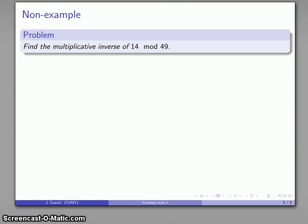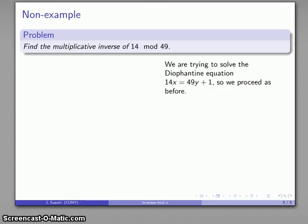Well, that's great. That gives us a nice general example of how we might find multiplicative inverses, except sometimes we can't. So for example, let's consider the problem of finding the multiplicative inverse of 14 mod 49. And if I try to do this, I'm going to try to find something which, when I multiply by x, gives me 1 mod 49, one more than a multiple of 49. So I have my Diophantine equation, and I can try to proceed as we did before.